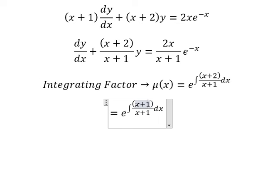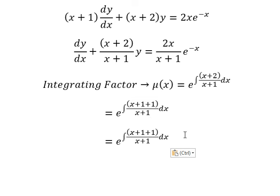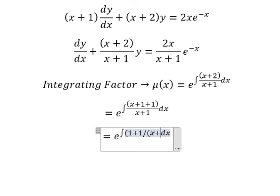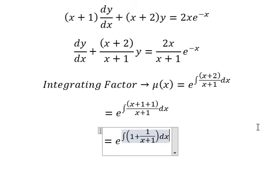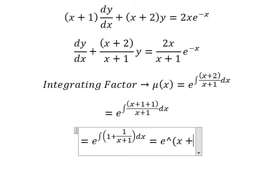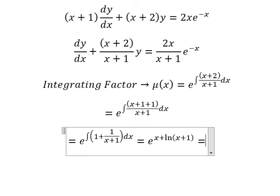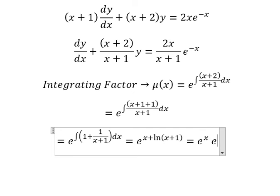So we have one plus one, so x plus one divided by x plus one, we have one. Next, the integral of one, that is x. The next one is ln of x plus one. And now we can put it like this.